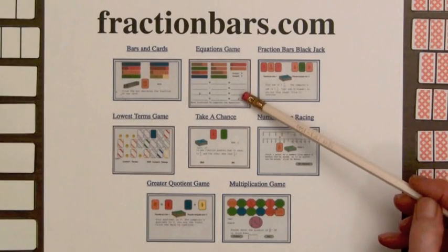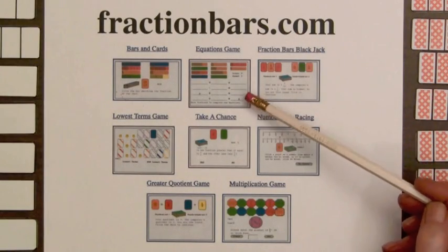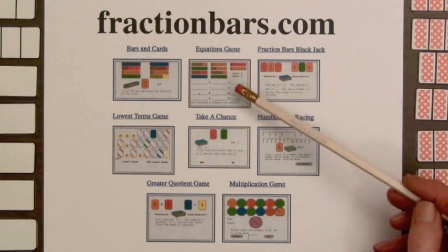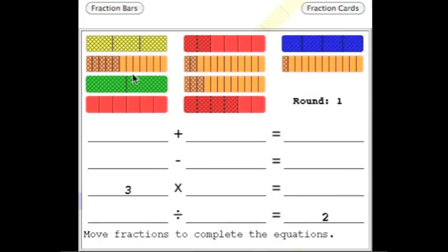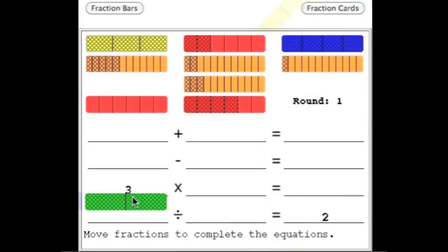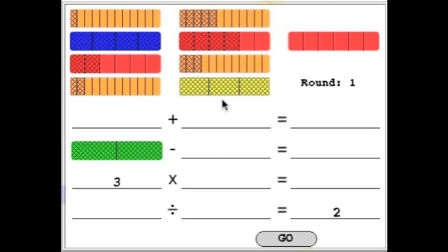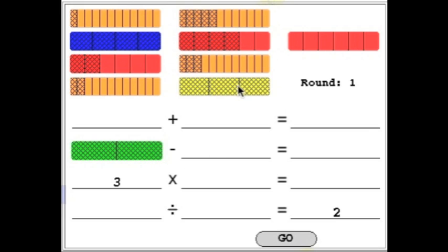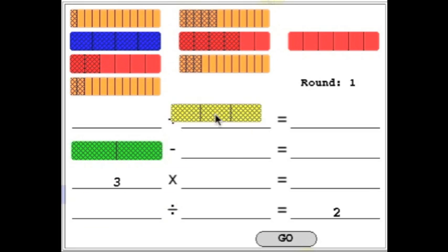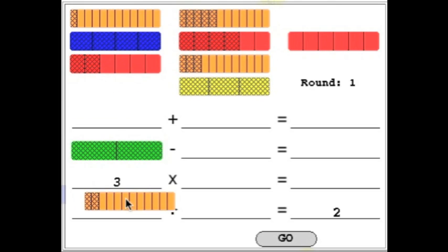The equations game on fraction bars can be played with either fraction bars or fraction playing cards. The object is to drag the bars into the ten blanks to form all four equations. This game can be a challenge, and moving the bars involves computation and trial and error. However, it will always be possible to form all four equations.